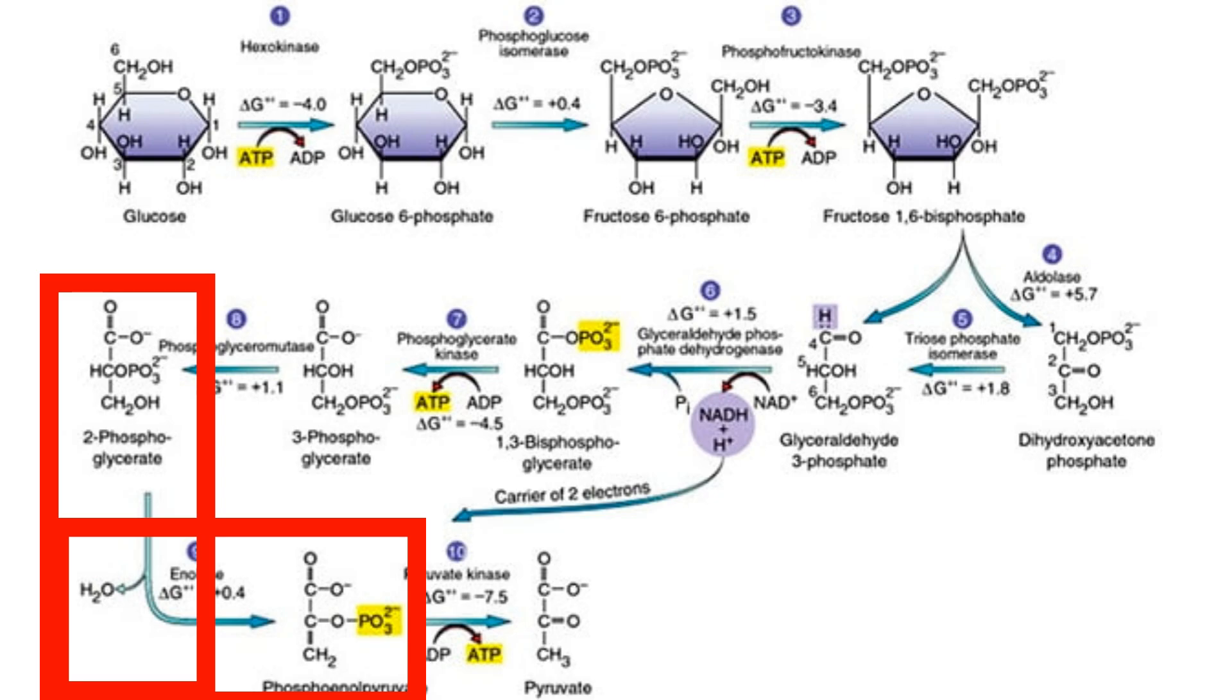In step 9, our 2-phosphoglycerate turns into phosphoenolpyruvate, and in this process, one water molecule is produced.